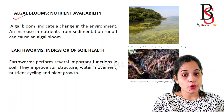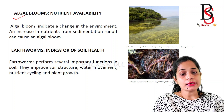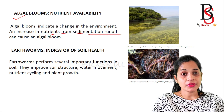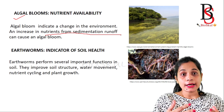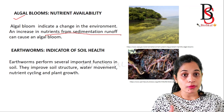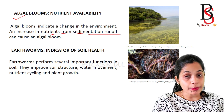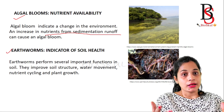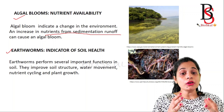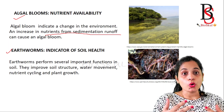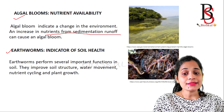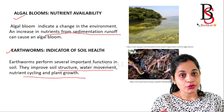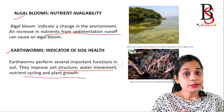Another example is algal bloom — the rapid growth of algae in an ecosystem. The number of algae increases due to an increase in nutrients from sedimentation runoff, causing algal bloom. Algal bloom leads to a reduction in dissolved oxygen in water, which stresses other organisms. Earthworm also acts as an indicator species of soil health — the population of earthworms indicates soil health condition, as they improve soil structure, water movement, nutrient cycling, and plant growth.